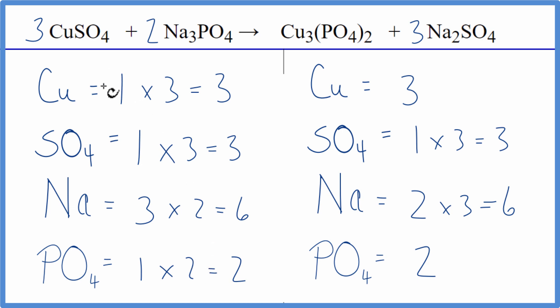So good trick to use when you have double displacement reactions with these polyatomic ions that appear on both sides of the equation. This is Dr. B with the balanced equation for CuSO4 plus Na3PO4. Thanks for watching.